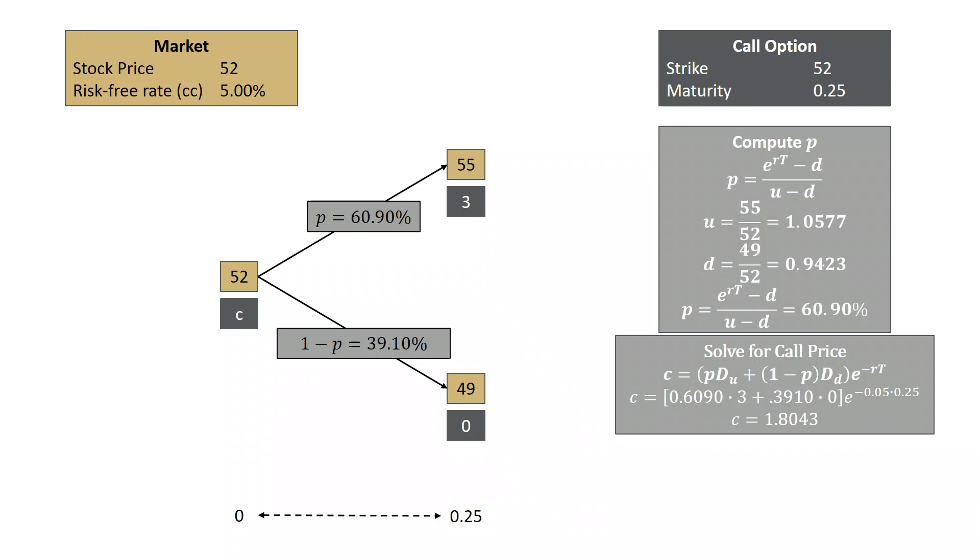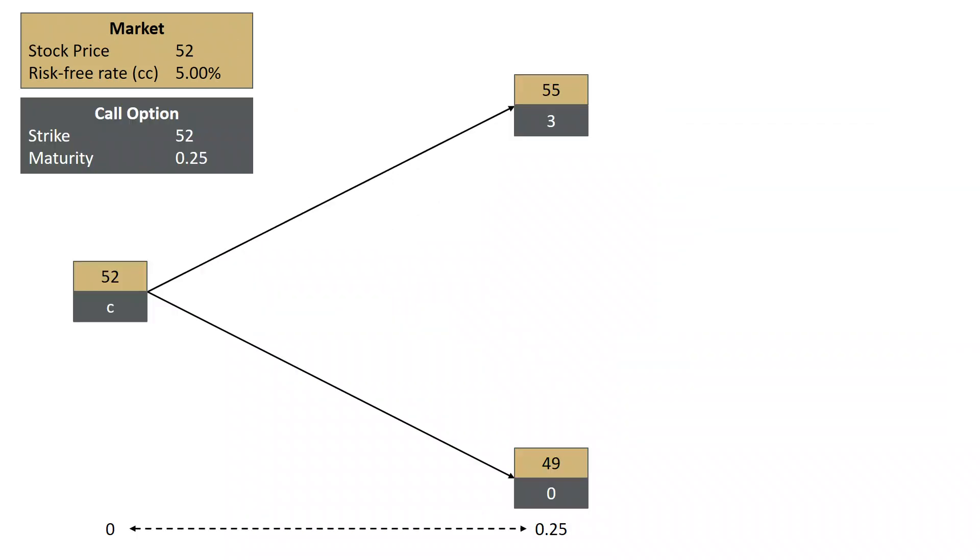I'm going to set it up so that it's on the same option, same market, and so that the 55 and 49 still appear in our tree. So let me redraw my picture and start over. Here's our picture. I've made it a little bit bigger. So the stock starts at 52.